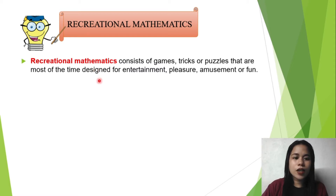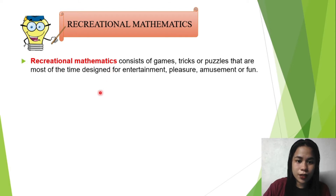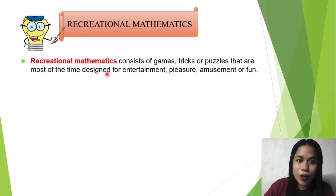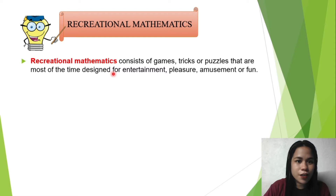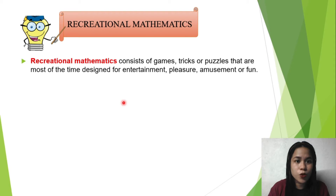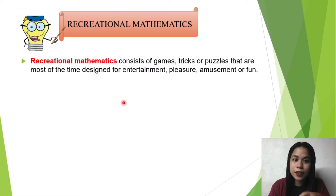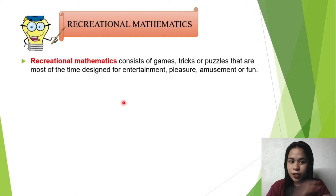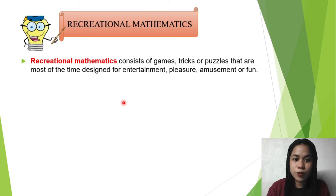Sometimes in recreational mathematics, you don't need to show your solution in terms of numbers or solve numbers quickly. It involves games, tricks, or puzzles. If you are familiar with the Rubik's Cube or a Sudoku puzzle — in a Rubik's Cube, you just need to arrange the colors so that each side has a single color, like yellow on one side and green on another, whatever color your Rubik's Cube has.